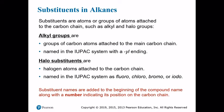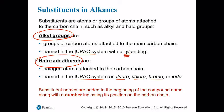The two main types of substituents are alkyl groups and halogen substituents. Alkyl groups are named like alkanes but with a -yl ending: methyl for one carbon, ethyl for two carbons, propyl for three carbons, and so on. For halogen substituents, the IUPAC system uses fluoro, chloro, bromo, or iodo. For both types, the substituent name goes at the beginning of the compound name as a prefix, along with a number indicating its position in the main carbon chain.